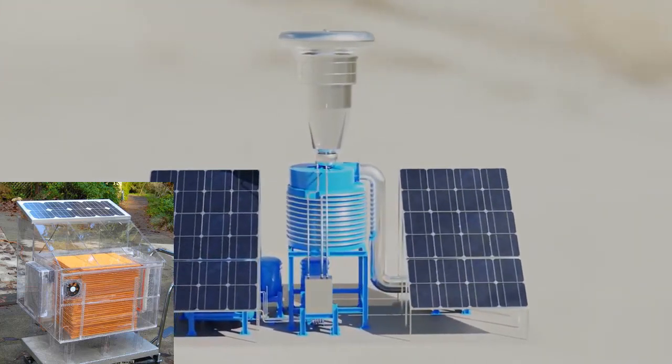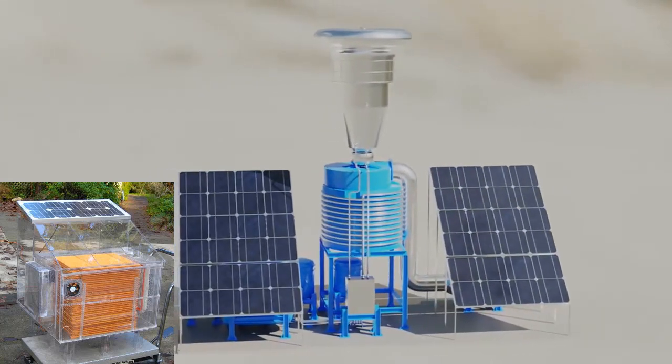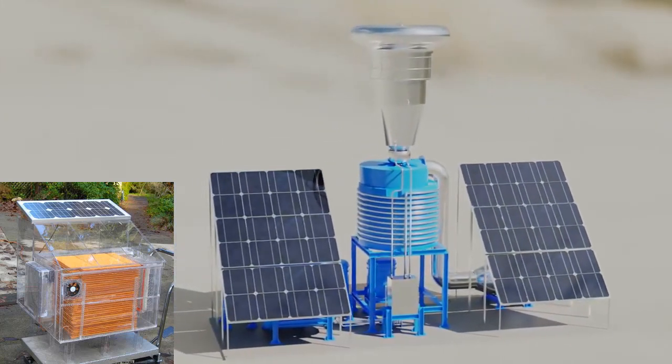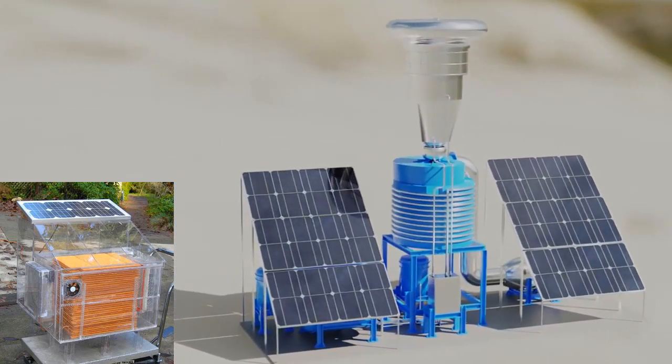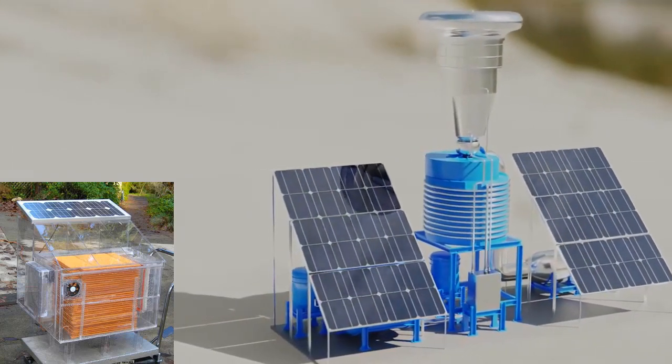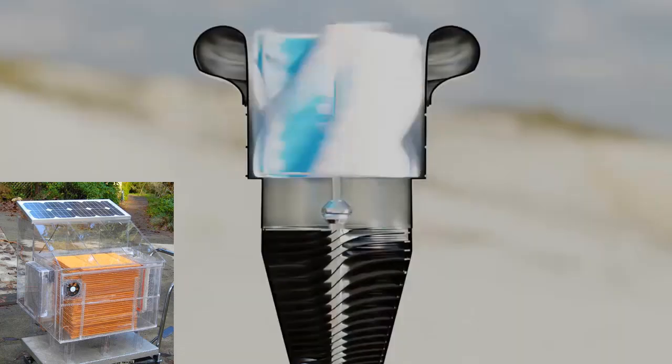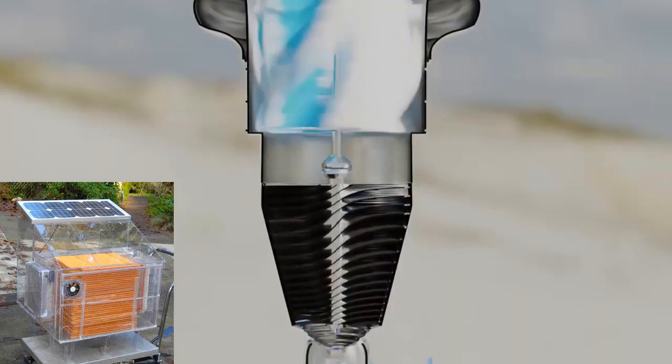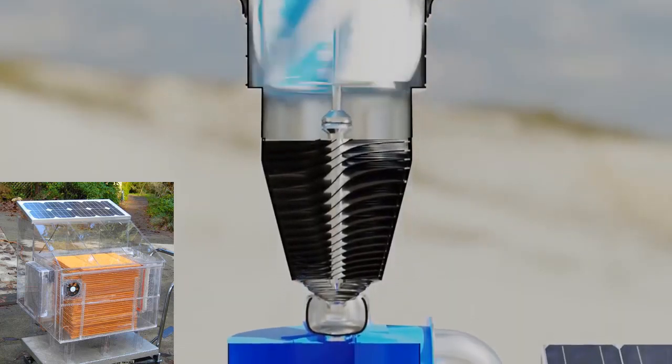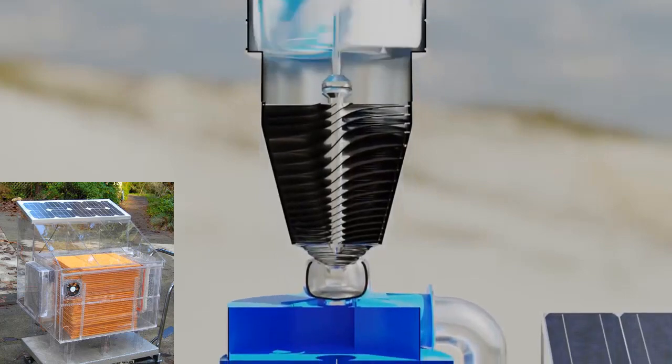Power efficient water condensation technology. Fortunately, there exists an alternative technology for AWGs that utilizes water condensation with the assistance of tiny propellers. This method requires only a small solar panel for energy generation, and the energy can be stored in a battery, enabling operation even in the absence of sunlight.